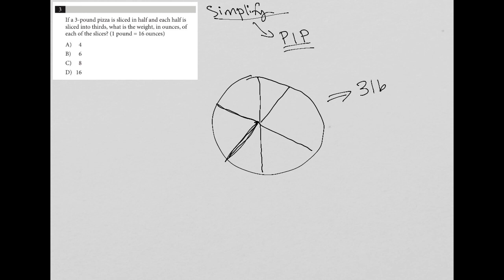And what is the weight in ounces of each of the slices? Well, one of these slices is one-sixth of the pizza. So I have one, two, three, four, five, six slices. So one slice is one-sixth of the pizza.